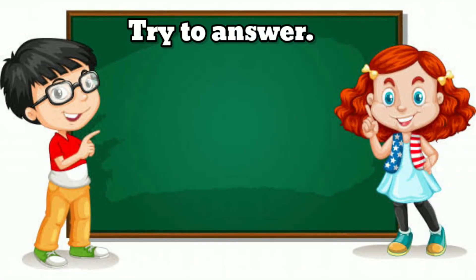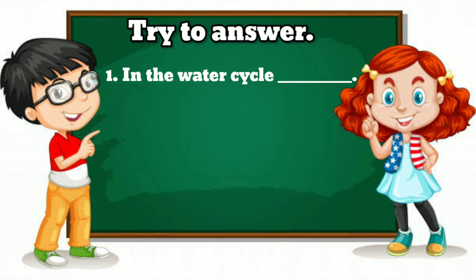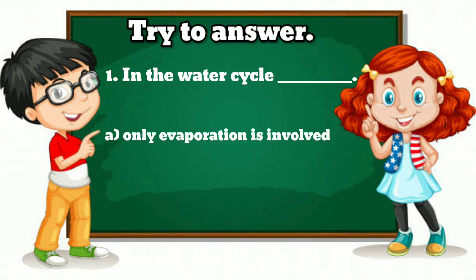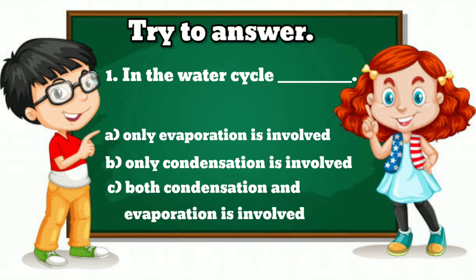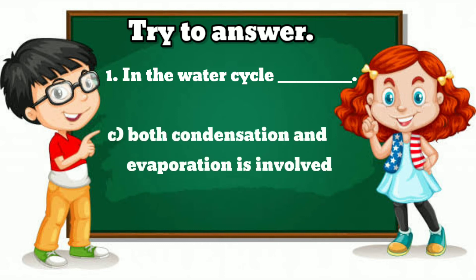Children, try to answer this question. In the water cycle, the given options are: Option A, only evaporation is involved — aaviyadal matrum nigalgradu. Option B, only condensation is involved — uraithal matrum nigalgradu. Option C, evaporation and condensation are involved. Which one is correct, children? Yes, the correct one is Option C: evaporation and condensation are involved in the water cycle.